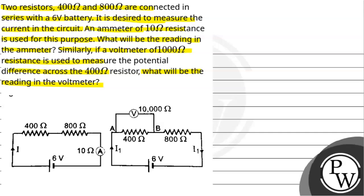Now we can see that diagram of 400Ω and 800Ω. These two resistors are connected in series with a 6V battery. An ammeter of resistance 10Ω is used to measure the current. If we connect a voltmeter of resistance 10,000Ω across the 400Ω resistor, we need to find the reading of the voltmeter.